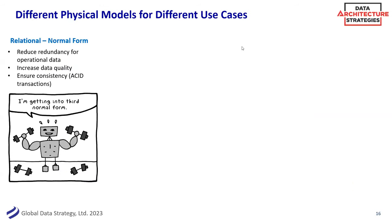Neither one model type is inherently better nor worse than the other — they have different use cases. Third normal form, fifth normal form — why do we do that? It's good for reducing redundancy, increasing data quality, ensuring consistency, enabling transactions. I want to know my customers and addresses — you don't want to store addresses in the customer table; you want to separate it out, have nice clean addresses that you can link together with address types. That's really good for things like master data and core dimensions for reporting. It's super valuable, it's core to a lot of what we do, but it is not everything.